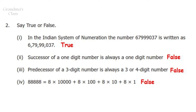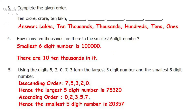Three: The predecessor of a 3-digit number is always a 3 or 4-digit number. This statement is also false because the predecessor of 100 is 99, which is a 2-digit number. Fourth one: 88,888 is represented in the expanded form — but this statement is also false because 8 into 1000 is missing.